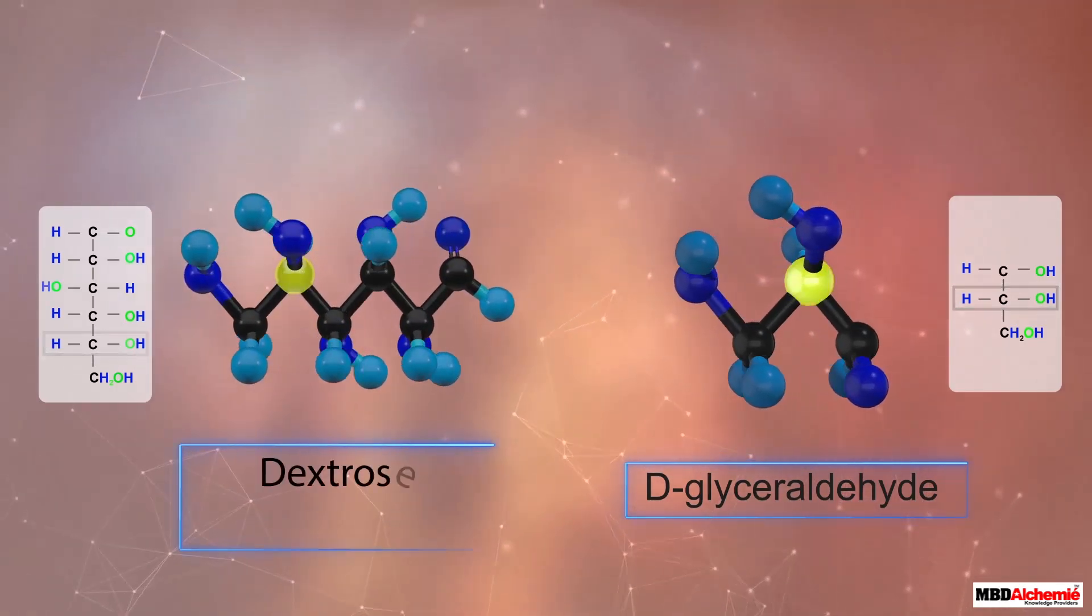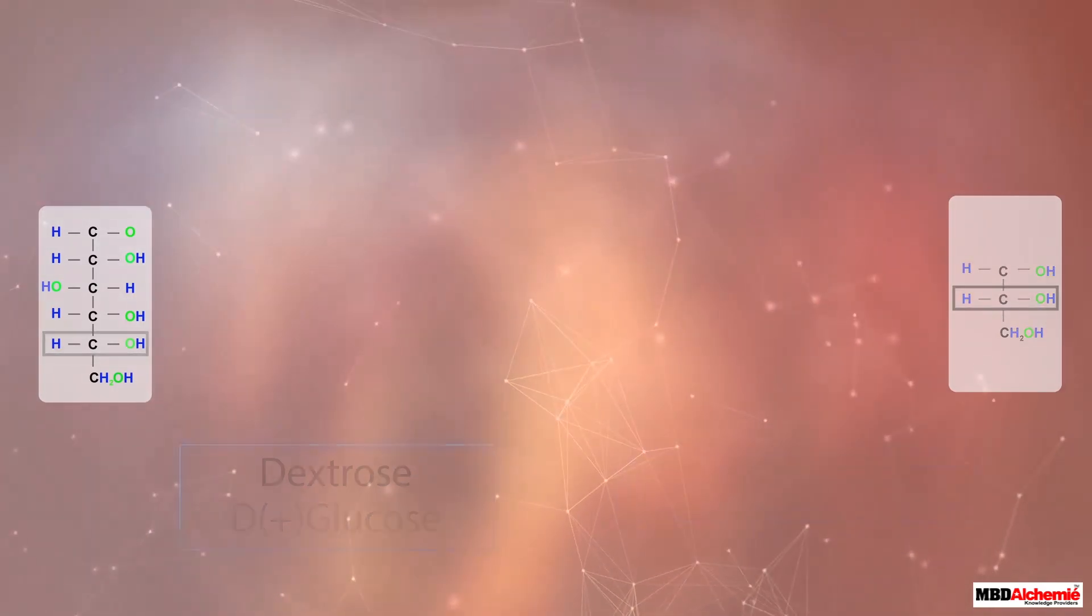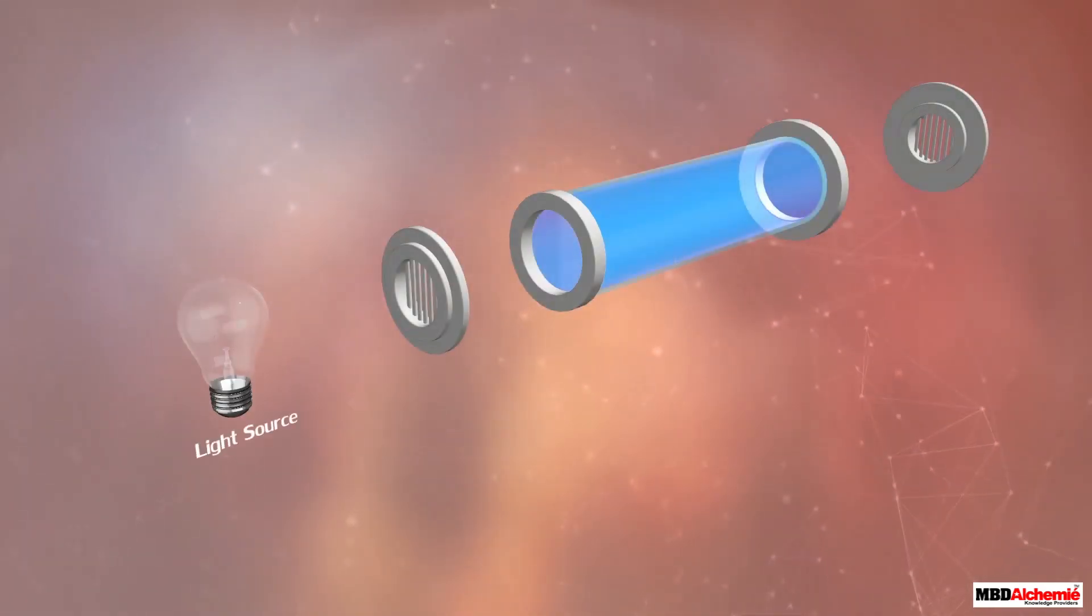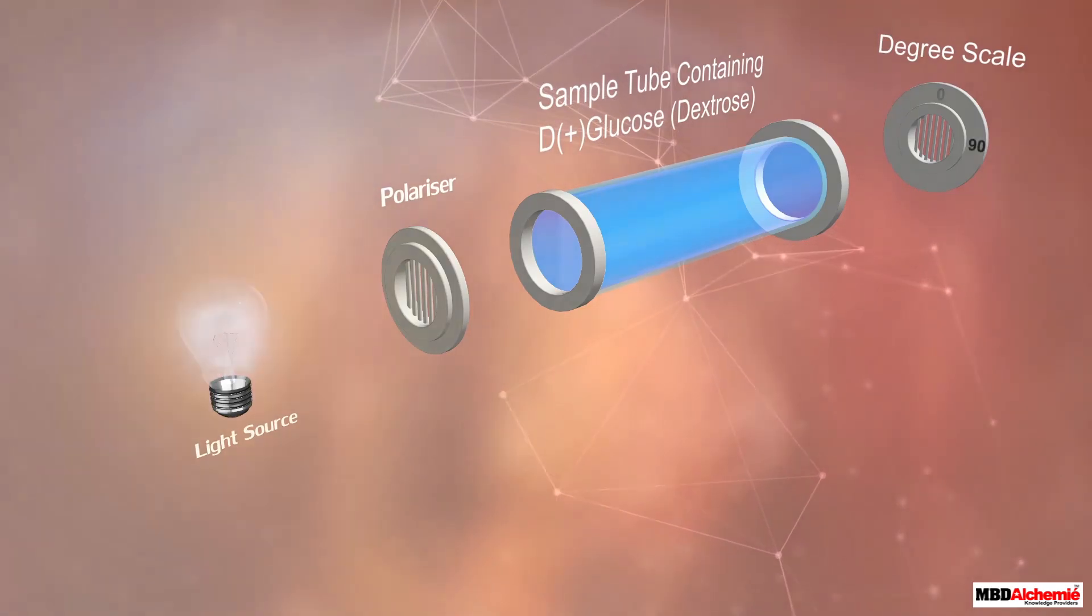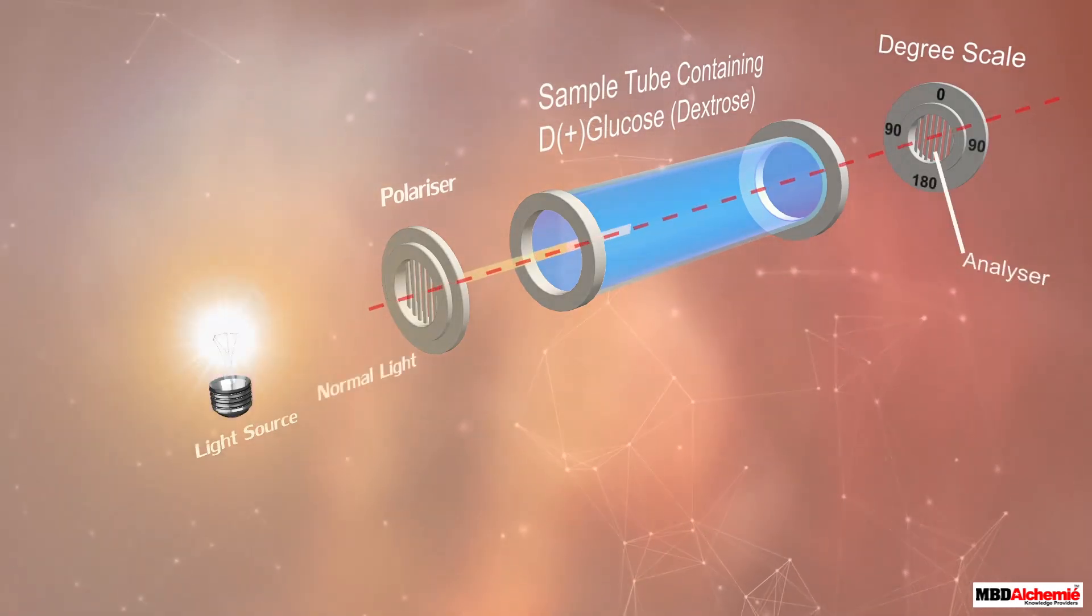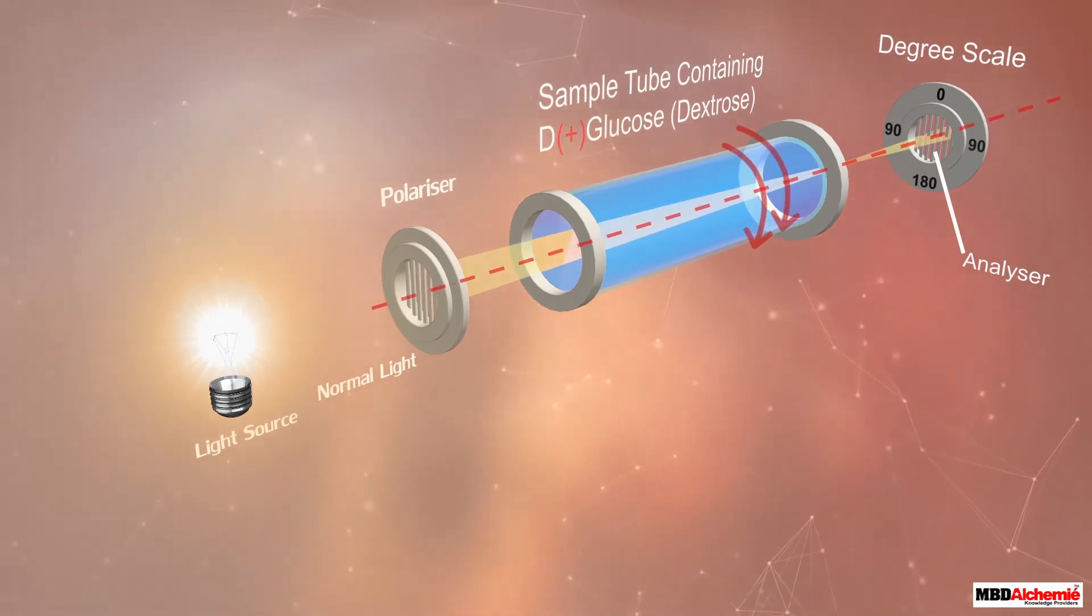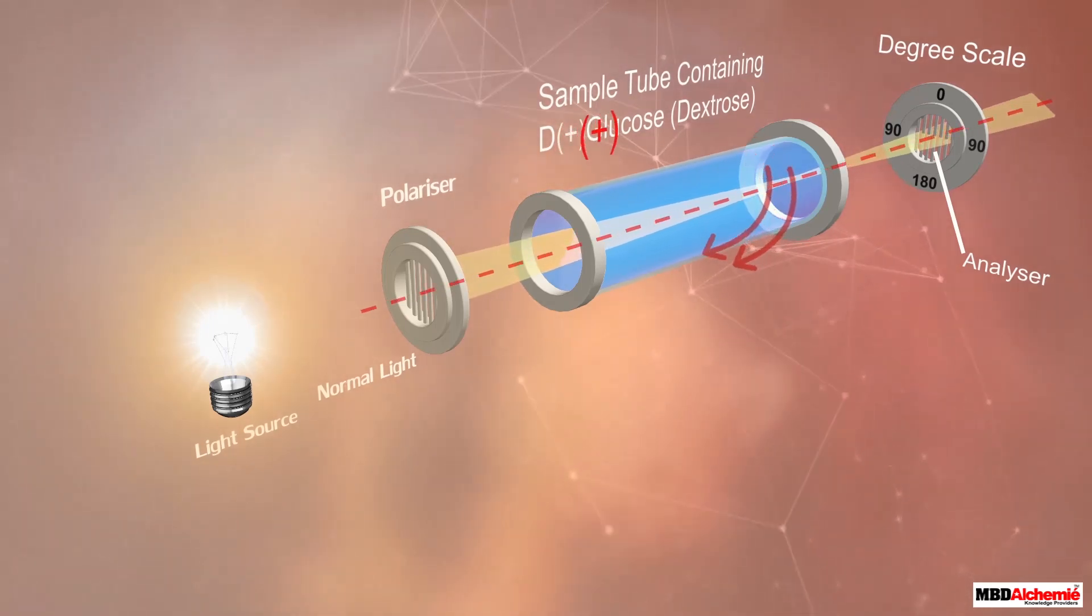Moreover, dextrose is dextrorotatory. This means that if a plane-polarized light is passed through a solution of dextrose, the plane of the light will rotate towards the right. The plus sign in the name of dextrose indicates that it is dextrorotatory.